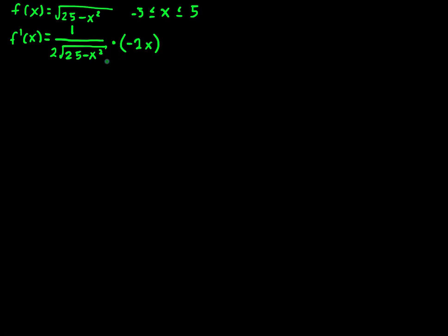All right, just to clean up a little bit, I'll multiply by negative two, cancel out the twos, so I get negative x, I'll keep the negative up there, divided by the square root of 25 minus x squared.